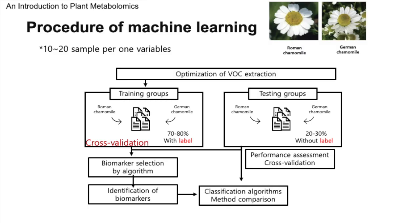Let's explore the machine learning workflow using a classification model to distinguish between German and Roman chamomile. Although these chamomiles may appear similar in appearance, their distinct uses in various industries highlight the importance of accurate classification. While the aroma of their essential oils easily distinguishes them for those experienced, individuals lacking prior exposure or experiencing olfactory challenges may struggle with differentiation. Therefore, employing a scientific approach becomes imperative for accurate classification. To develop our classification model, we begin by optimizing the VOC extraction method. Our sample collection strategy targets 10 to 20 samples per variable, ensuring the robustness of our dataset, as the integrity and representativeness of our data lay the foundation for the success of our classification model.